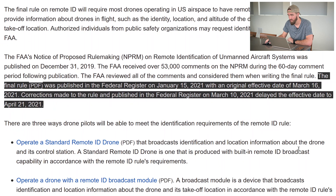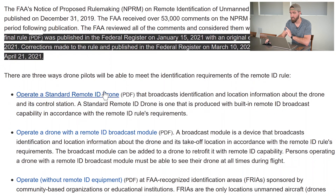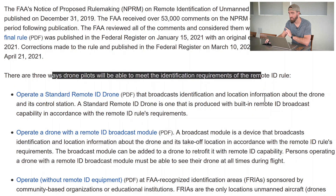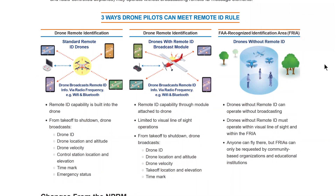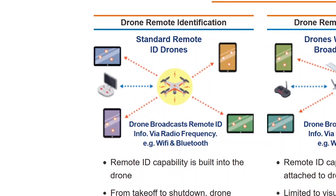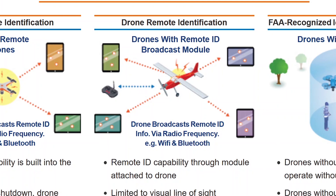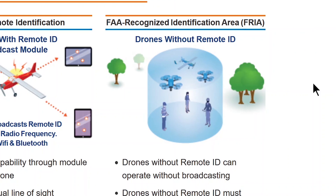There are going to be three ways for drone pilots to meet the Remote ID rule's identification requirements — though it's a little misleading because there are really only two. You have standard Remote ID built into the drone, a Remote ID broadcast module attached after-market, and then FAA Recognized Identification Areas — or FRIAs — which is where you can fly your drone if you don't have Remote ID.